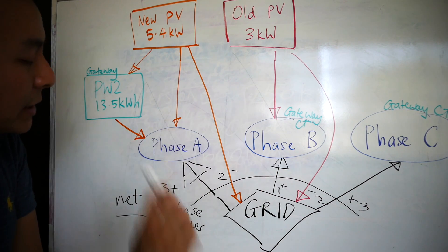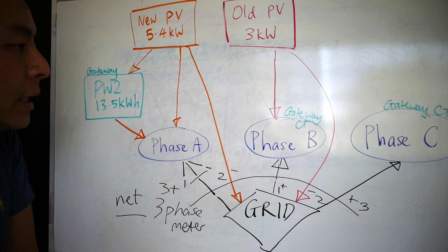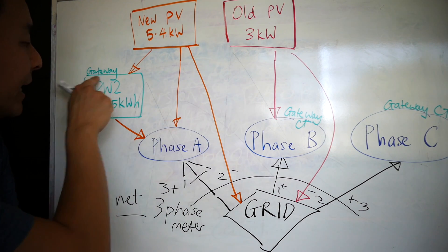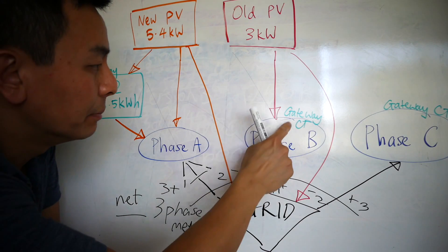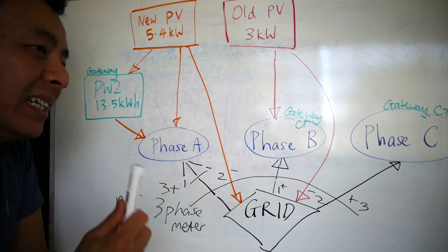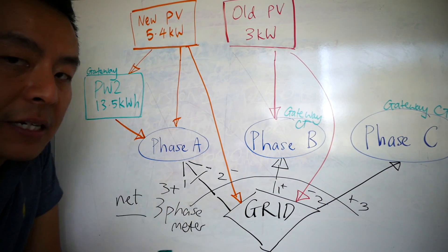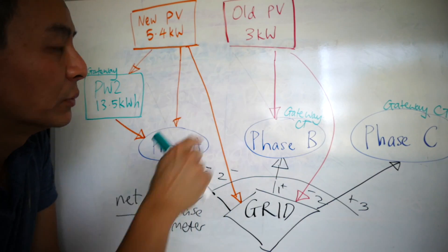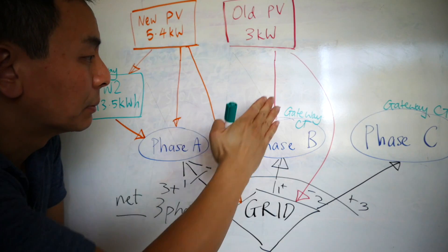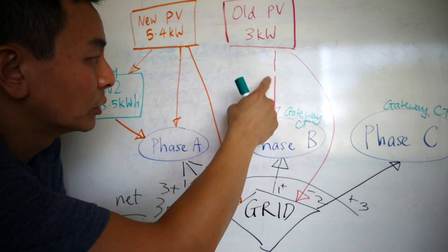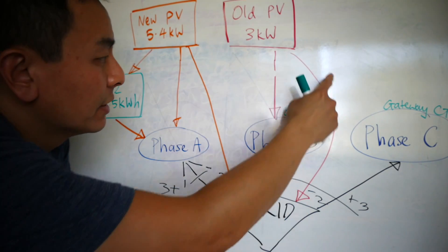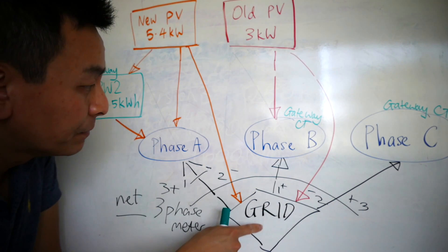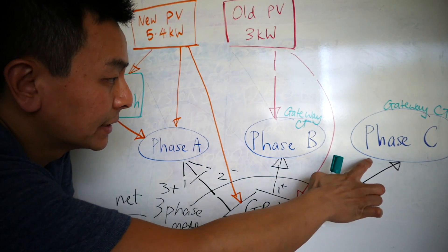The other complicating thing is that with the Powerwall 2, the gateway that comes with it will also meter the B phase and the C phase. Let's just say for example at night time, when the sun is down, the solar panels on my B phase, which are the old panels, no longer supply the home. So now there's no more sun. Now the B phase at night is using energy from the grid, as does the C phase.